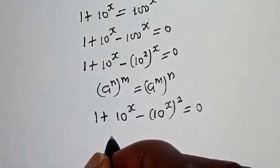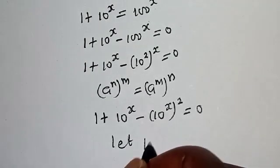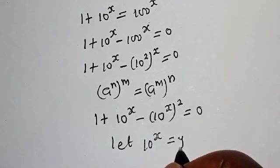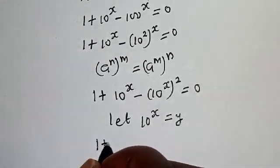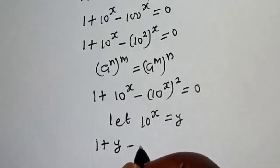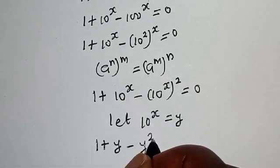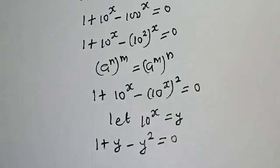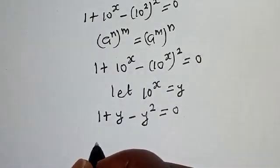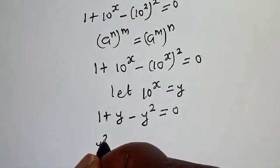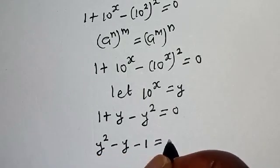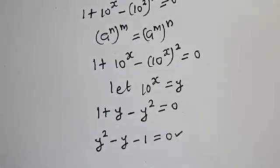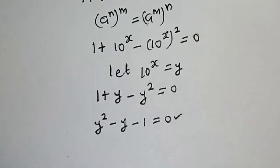From here, let 10^s equal y. So we have 1 plus y minus y squared is equal to 0. Rearranging, we get y squared minus y minus 1 is equal to 0. This is a quadratic equation which can be solved using the quadratic formula.